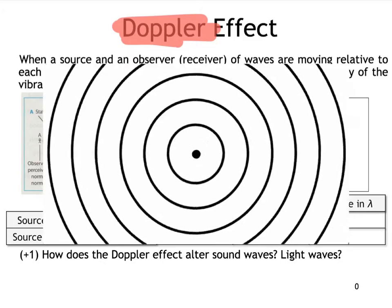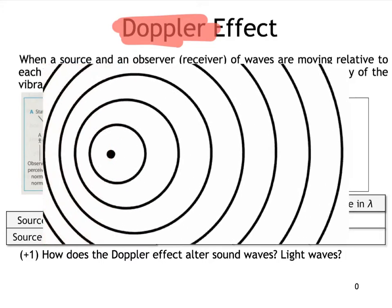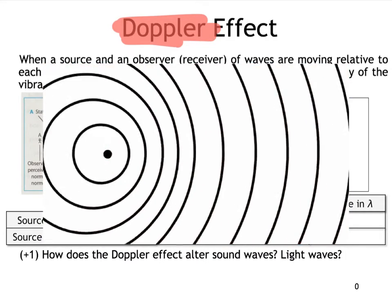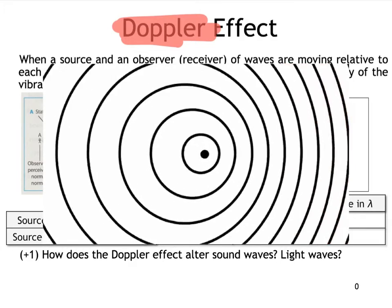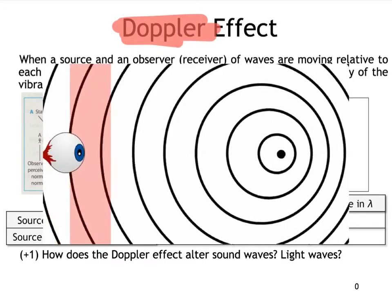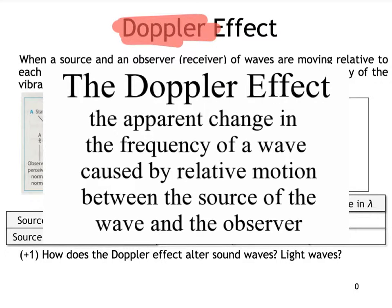We see the Doppler effect when the thing emitting waves moves. In the direction it's moving, the wavefronts bunch up, and behind it they spread out. If the object is moving towards a stationary observer, those bunched-up waves are observed at a high frequency. If the object is moving away, the waves are observed at a lower frequency. That is the Doppler effect — the apparent change in the frequency of a wave caused by relative motion between the source and the observer.